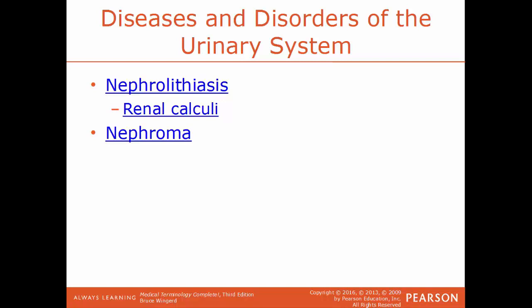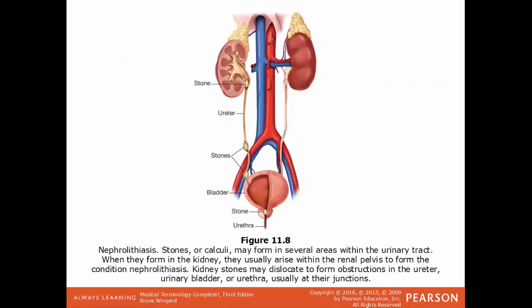Nephroma is a tumor that arises from renal tissue — a tumor found in a kidney. In this illustration, we have an example of nephrolithiasis and some common places that kidney stones deposit: where the ureter meets the renal pelvis, near the femoral artery, and right at or inside the bladder.